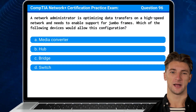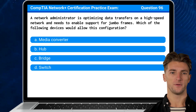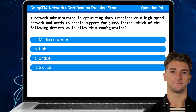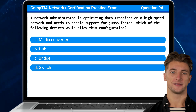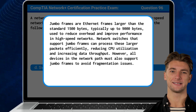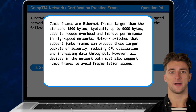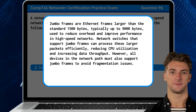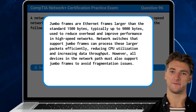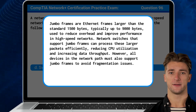Question 96. A network administrator is optimizing data transfers on a high-speed network and needs to enable support for jumbo frames. Which of the following devices would allow this configuration? The answer is D. Switch. Jumbo frames are Ethernet frames larger than the standard 1500 bytes, typically up to 9000 bytes, used to reduce overhead and improve performance in high-speed networks. Network switches that support jumbo frames can process these larger packets efficiently, reducing CPU utilization and increasing data throughput. However, all devices in the network path must also support jumbo frames to avoid fragmentation issues.